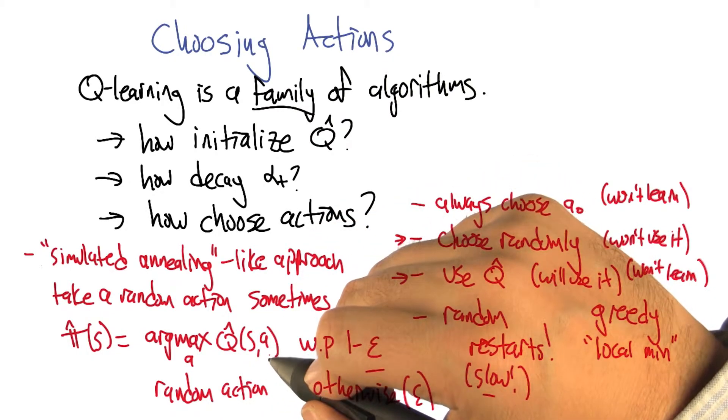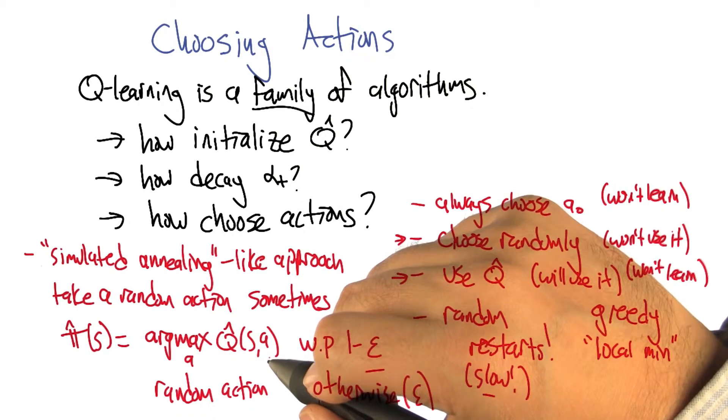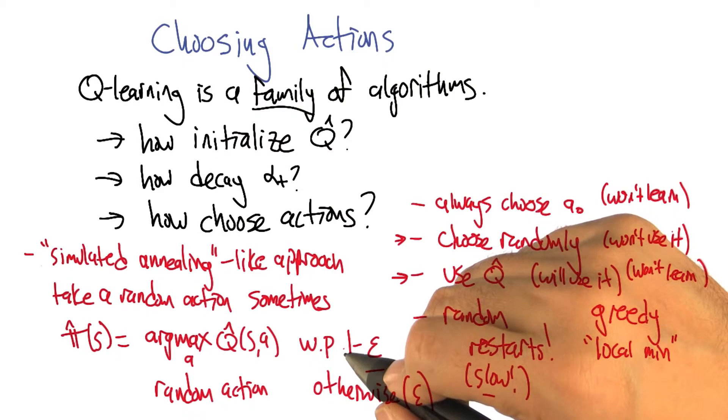So there could be state action pairs that just can't ever be reached, in which case you won't reach them. But that's okay, because since you can't reach them, they really don't matter. Yeah, they sort of don't exist. Exactly.